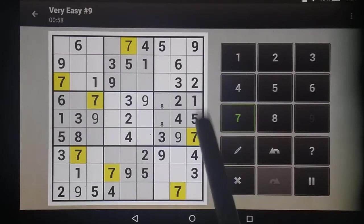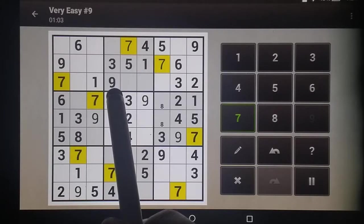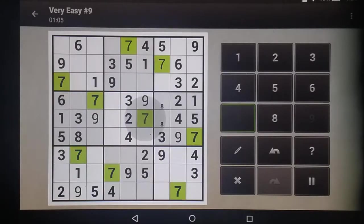These two rows are covered. That column is covered, so that's our 7. This column is covered. This row is covered. There's our 7.